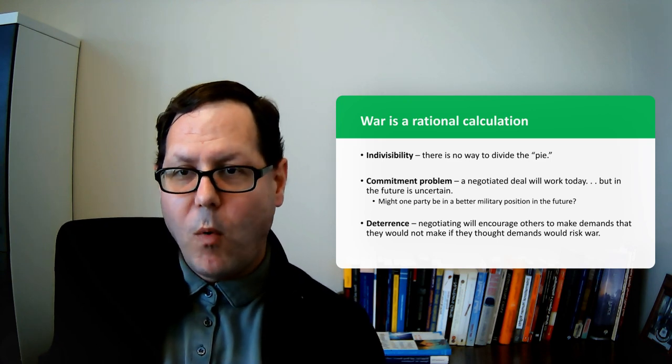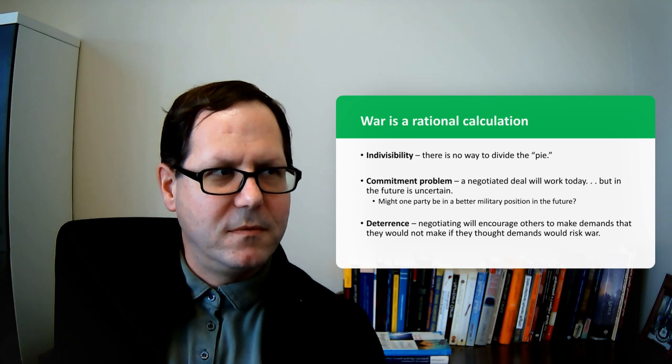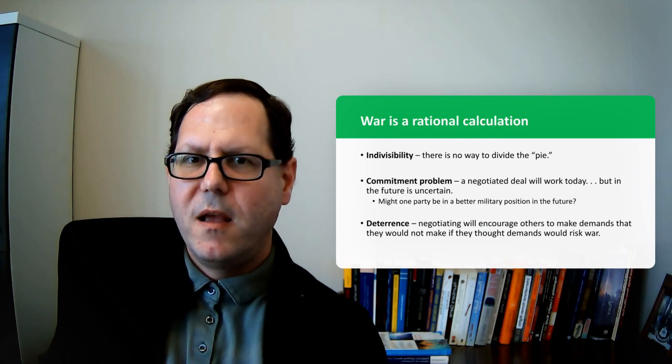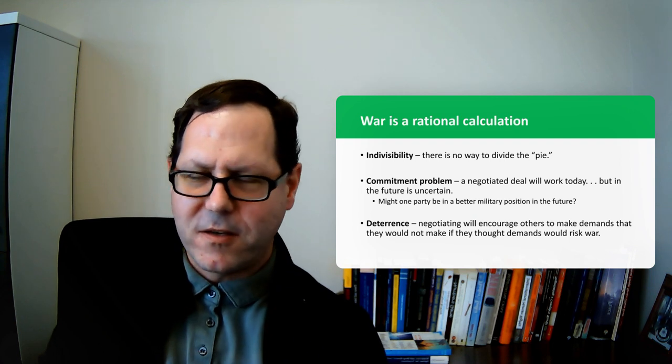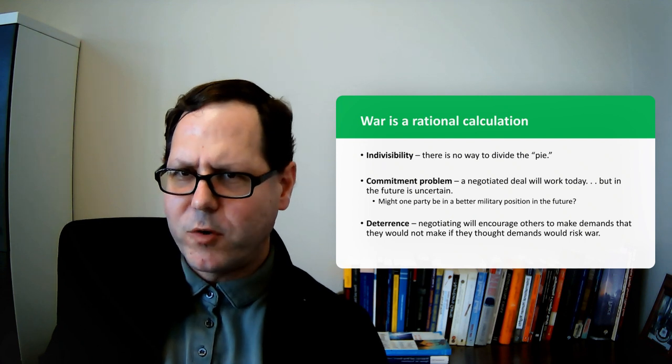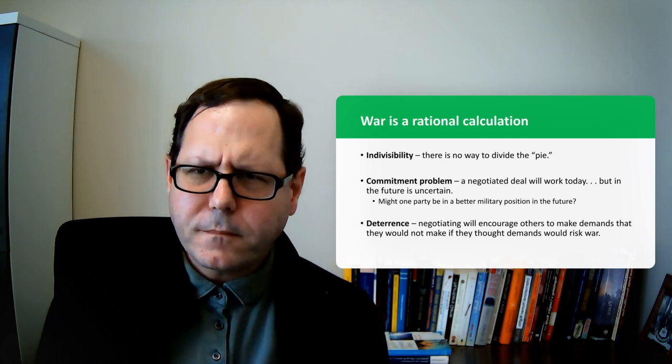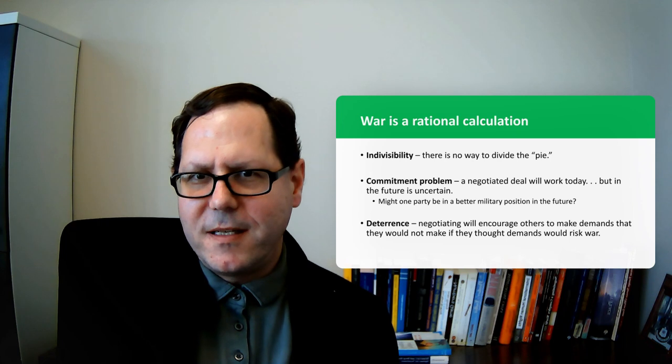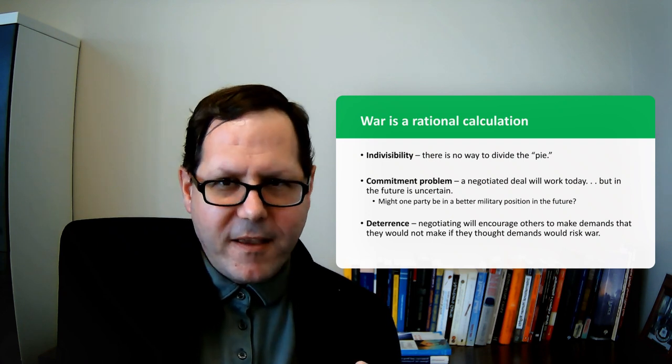The final story that we tell about why states might opt to fight given the magnitude of costs that come with war is this idea of deterrence, that negotiating might actually encourage other sides to make demands. This is something we talk about when we talk about the spiral model versus the deterrence model, but it shows up here in the bargaining theory of war, that if you negotiate with others, they might take that as a sign that you're willing to compromise, and they might make demands that they hadn't previously made.